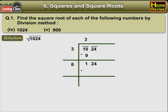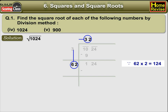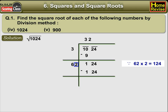Now, double the divisor and enter it with the blank on its right side. Guess the largest possible digit to fill the blank, which also becomes the new digit in the quotient, such that when the new number is multiplied to the new quotient, the product is less than or equal to the new dividend. In this case, we can see that 62 into 2 is equal to 124. So, the new digit in the quotient is 2.